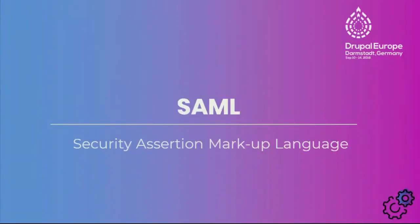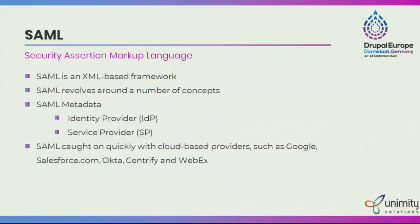Now, SAML — Security Assertion Markup Language — is an XML-based framework. It helps eliminate application-specific passwords for SSO using a web browser. It has two types: we can configure it as an identity provider or as a service provider. The SAML metadata ensures the transmission of data between the identity provider and the service provider. The identity provider validates the user trying to access the website using SSO, and the service provider gives access to the web content or web service depending on what the identity provider verifies.